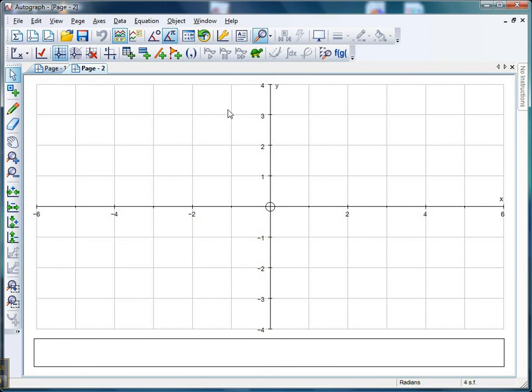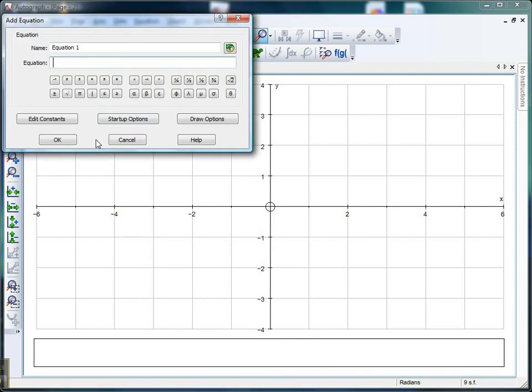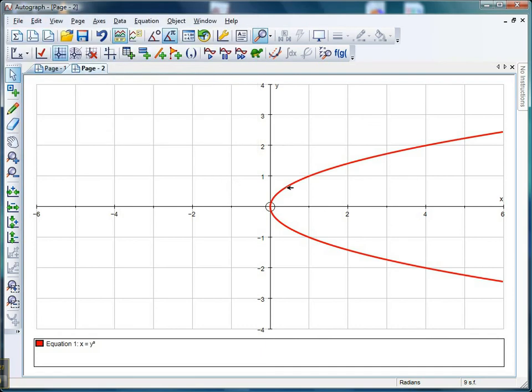You just need an equation that starts instead of y equals, starts with x equals. Let's have a look at a classic like x = y². Again you can just hit y twice or you can do the little square thing. We'll get students to predict what it looks like and click OK.